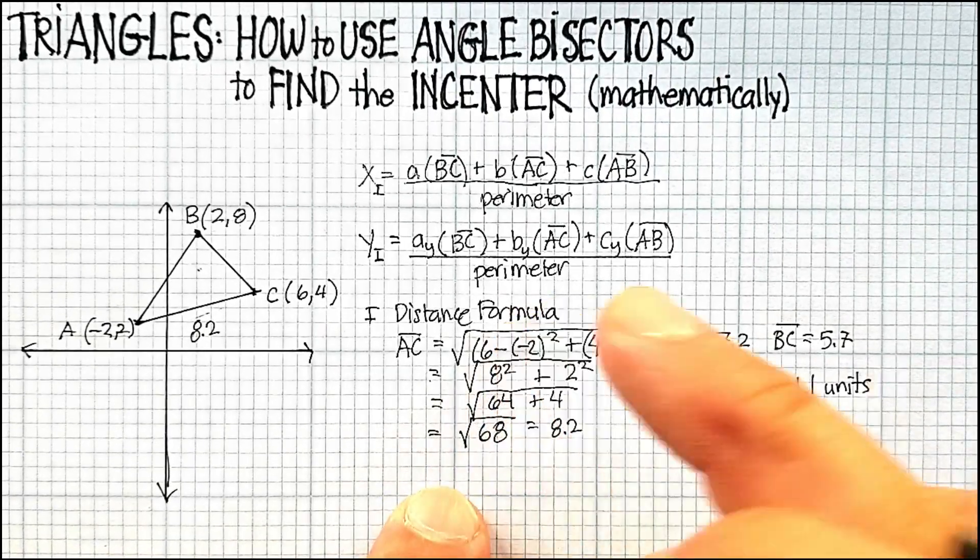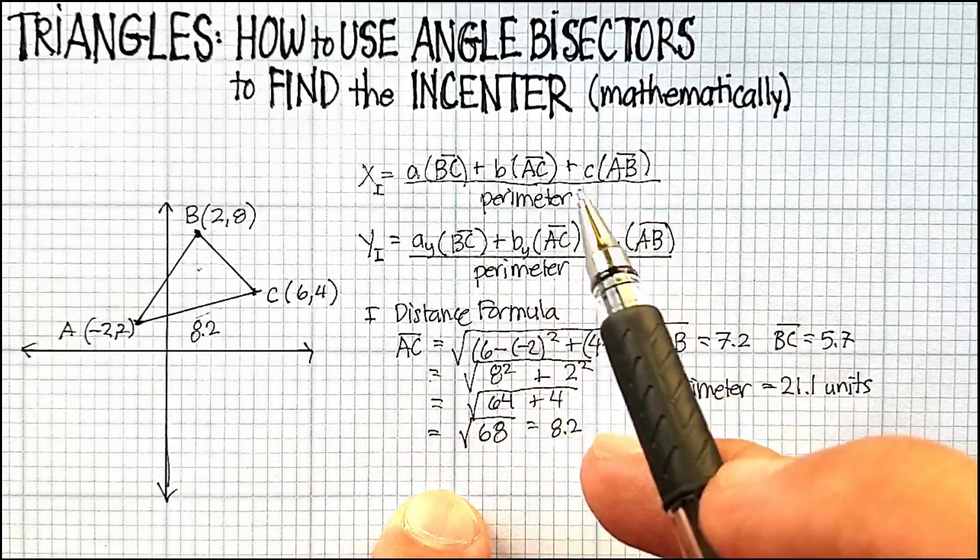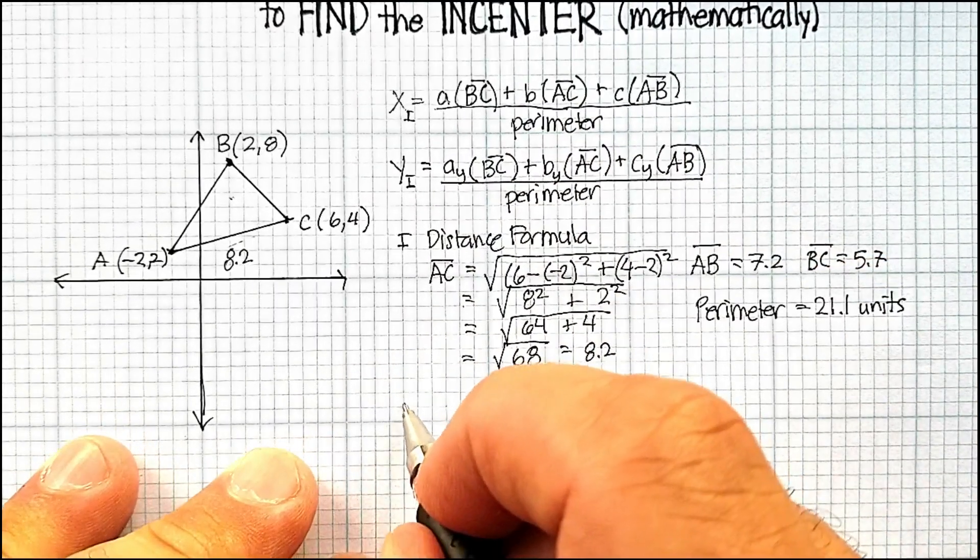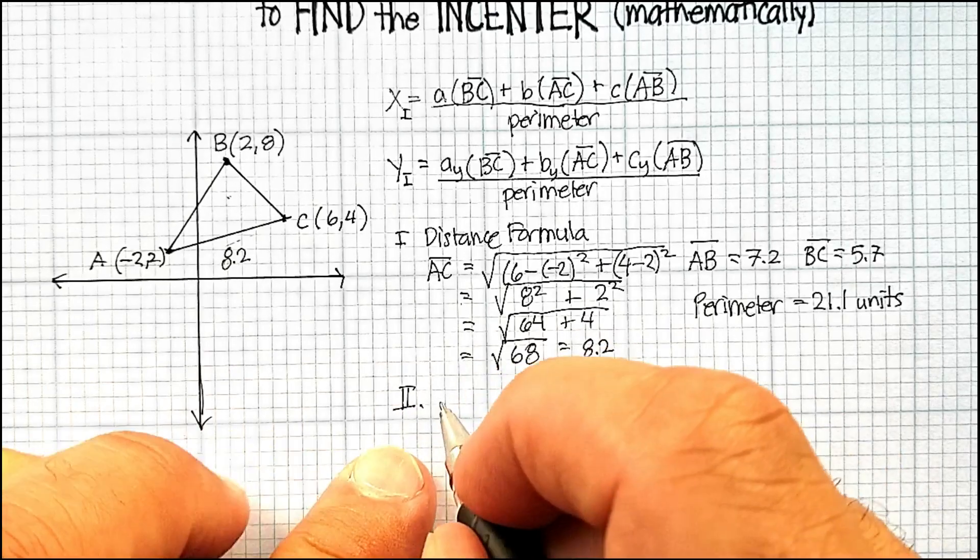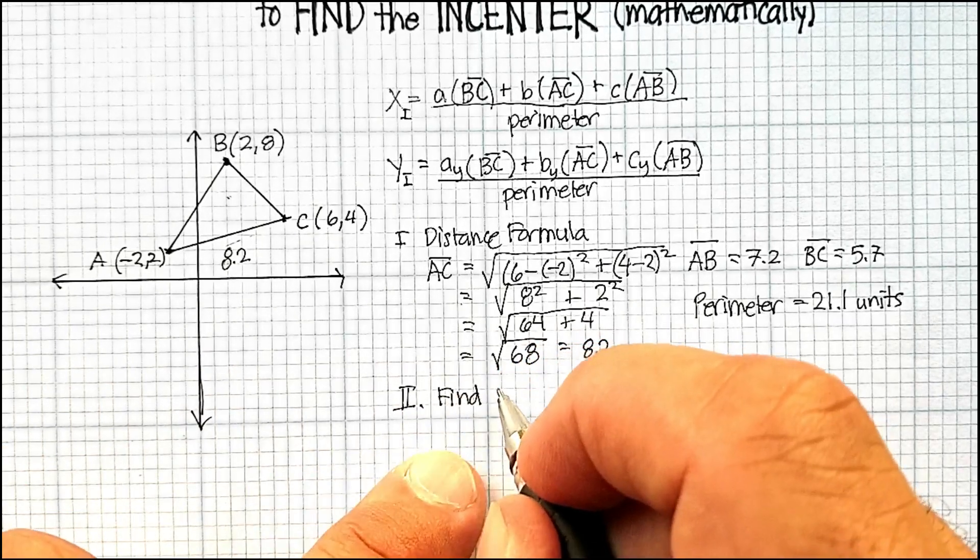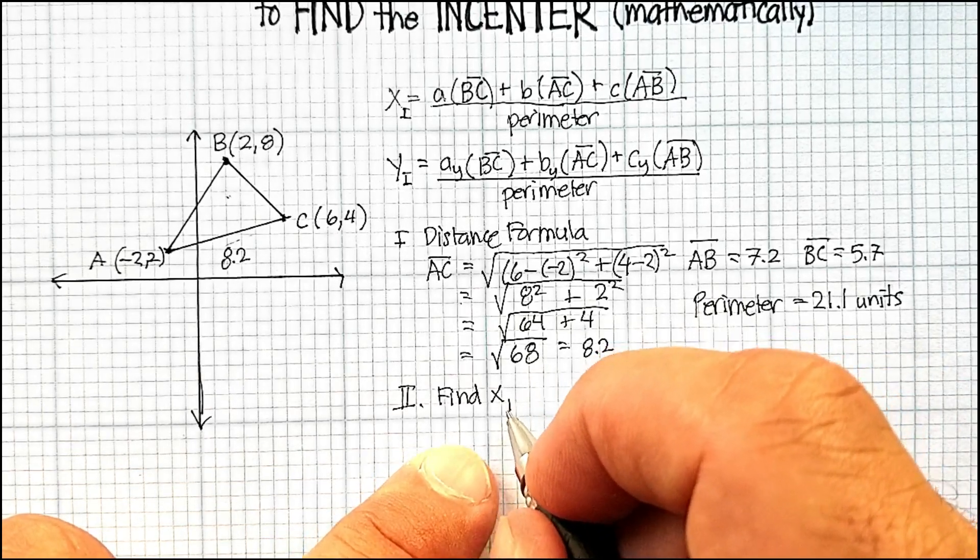So now that I've got the perimeter, let me just go ahead and do the x value. And you can see how that works. So let's find the x, we'll call this point 2, finding the x of the incenter.